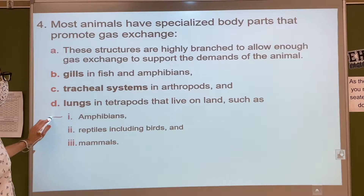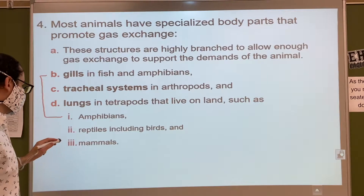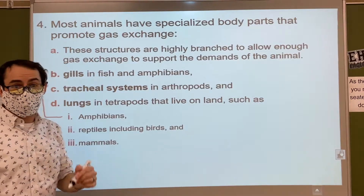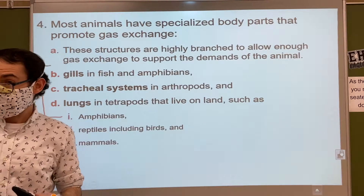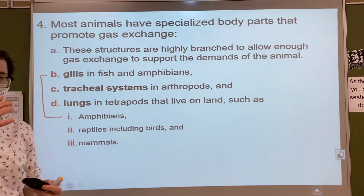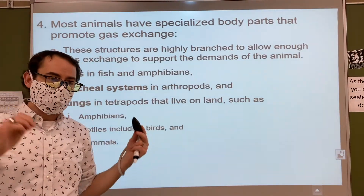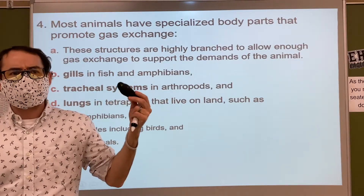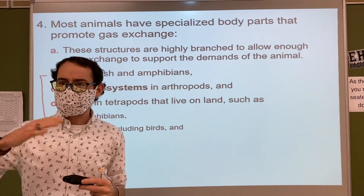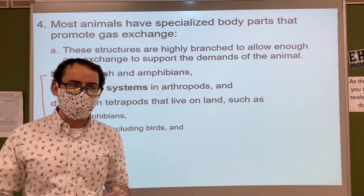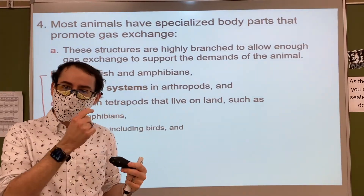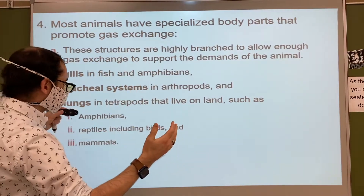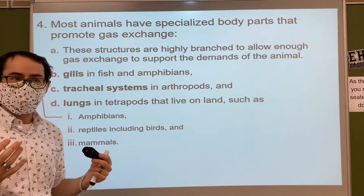Amphibians appear in two categories — they have both gills and lungs. Reptiles, birds, and mammals all have lungs. When you think about humans and other animals, usually you think humans are at the top of the pyramid — the most evolved. But interestingly enough, in terms of lungs and breathing, we actually are not the most evolved.